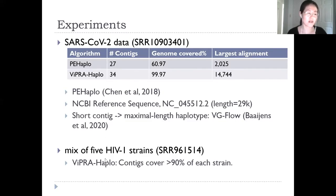We also evaluate our methods on the mix of five HIV-1 strains data. ViPRA-Haplo can reconstruct over 90% of each of the five strains.